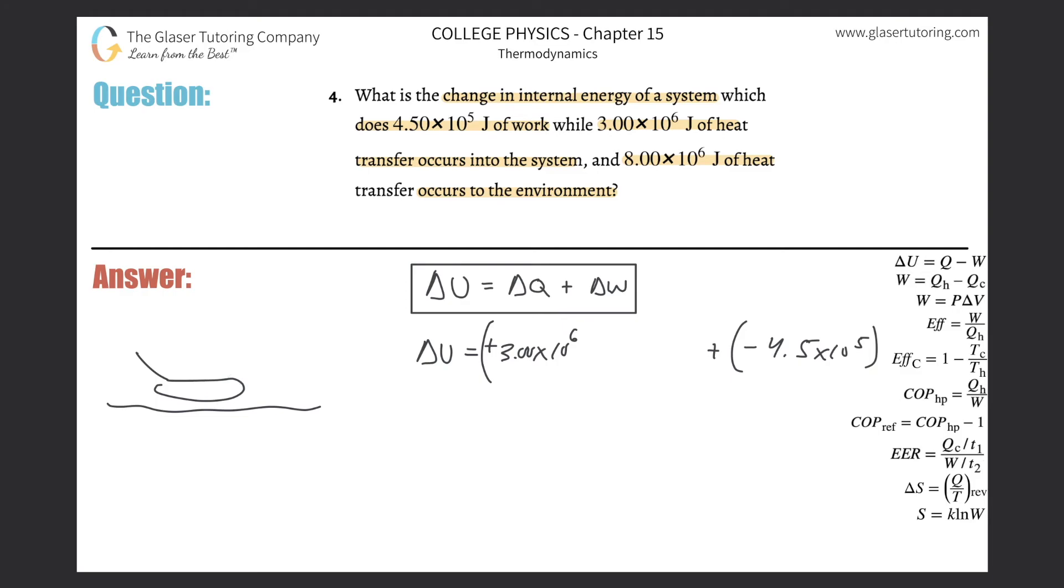So that basically means that I now need to subtract the 8, because it's a negative value, it's losing heat. 8 times 10 to the 6 joules. And now literally all you got to do is just add it up. The signage is very important here, as you can see. So 3 times 10 to the 6, minus 8 times 10 to the 6, and then plus a negative, so minus 4.5 times 10 to the 5.